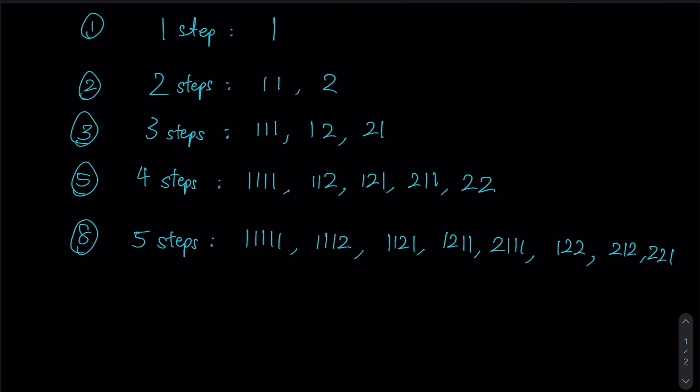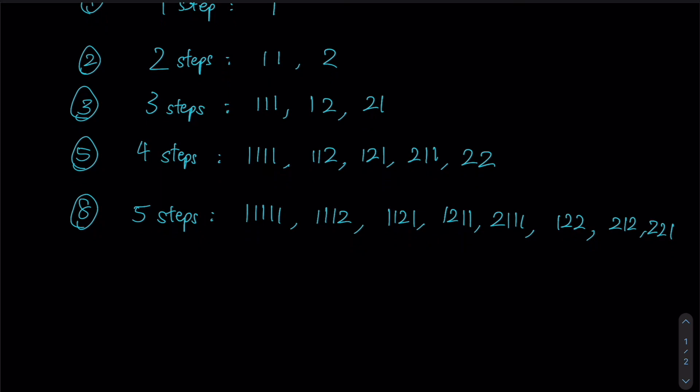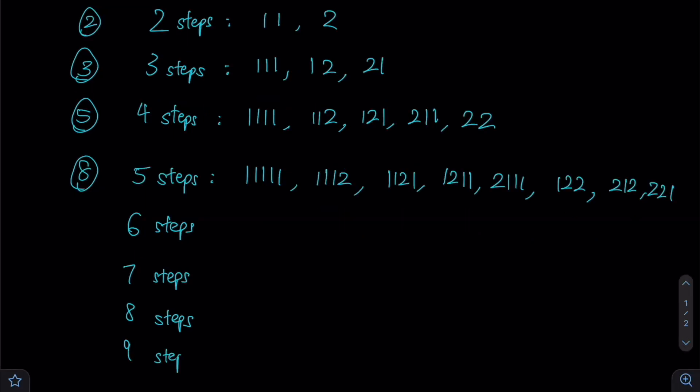Hence, we can observe that the pattern is indeed that one of a Fibonacci sequence, right? So therefore, for six steps, seven steps, eight steps, as well as for nine steps, you can simply follow the rules of a Fibonacci sequence to derive all of these numbers over here.